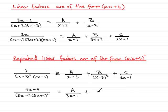Then we hit the repeated factor, so we'll have another constant, B, over the linear factor, 5x plus 1. And then plus another constant, C, over the repeated factor, 5x plus 1 all squared.